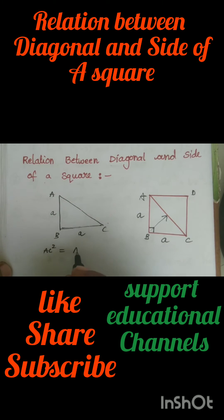So AC square is equal to AB square plus BC square. As the length of AB is a units and length of BC is a units, we have a square plus a square equals 2a square.